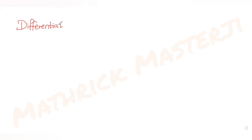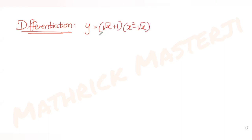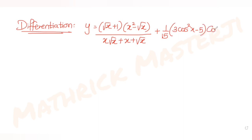Hi guys, I hope you are all doing well. Today's question is from the topic of differentiation. The question tells us: if y is equal to the square root of (x+1)(x² - √x) divided by (x√x + x + √x) plus 1 over 15 bracket, we have been given 3cos⁵x minus 5cos³x, and we need to figure out the value of 96 times y'(π/6).